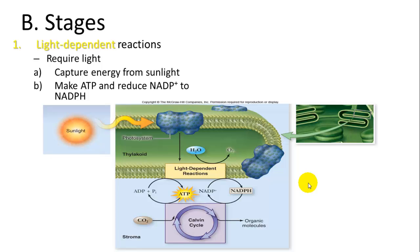There are two general stages of photosynthesis. The first are the light-dependent reactions, where light is required. During these reactions, you capture energy from sunlight, make ATP, and reduce NADP+ to NADPH — adding an electron to NADP+ to store potential energy.